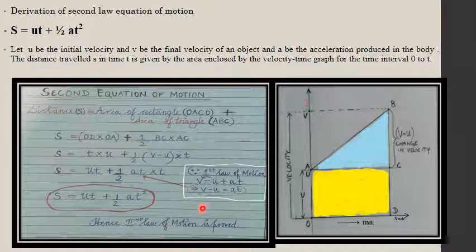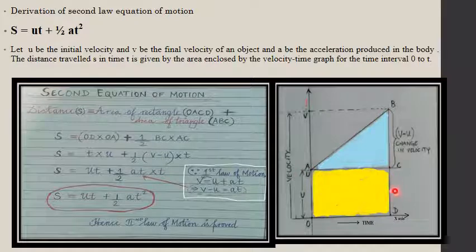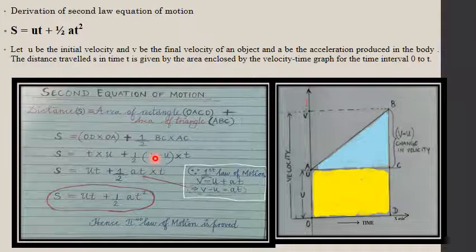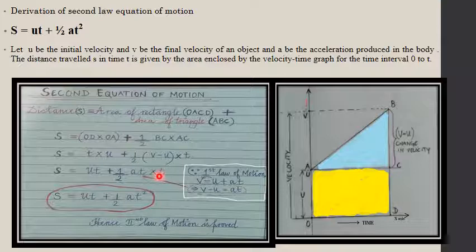This derivation is straightforward. You just need to know the area of a triangle and the area of a rectangle, apply them to the graph, substitute the letters according to the formula, and you get the result. I hope this concept is clear for you.